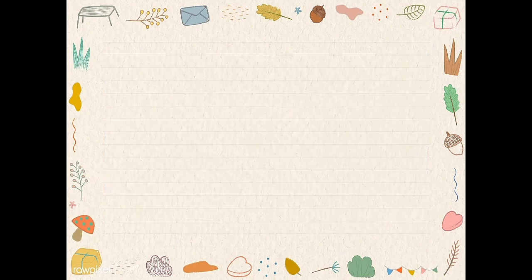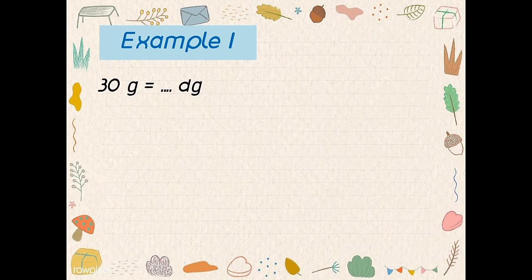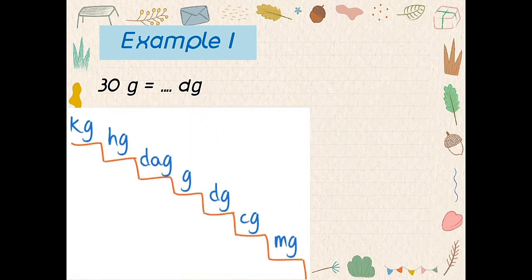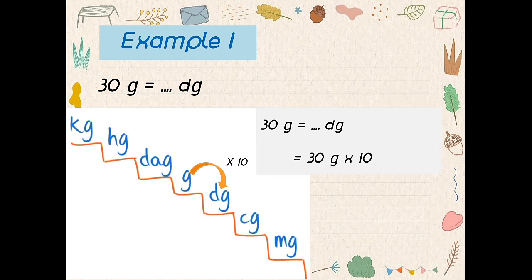Example number one: 30 gram, how many desigram? From gram to desigram — up or down? Good, down. How many? Just one. So, times 10. 30 gram times 10 — so the answer? Yeah, 300 desigram.